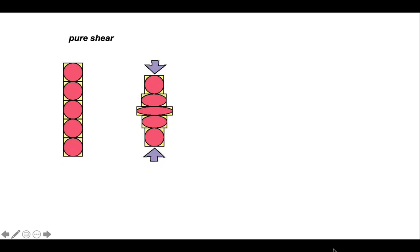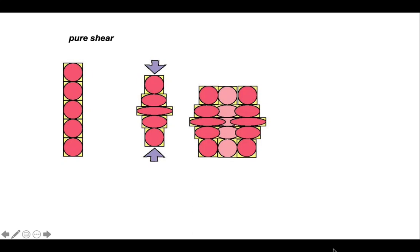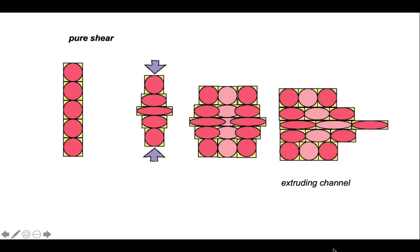But let's consider what would happen if we put adjacent columns of markers adjacent to the one that we've sketched. Well, they can't work like this because they start overlapping, in which case we have a problem of overlapping rocks.